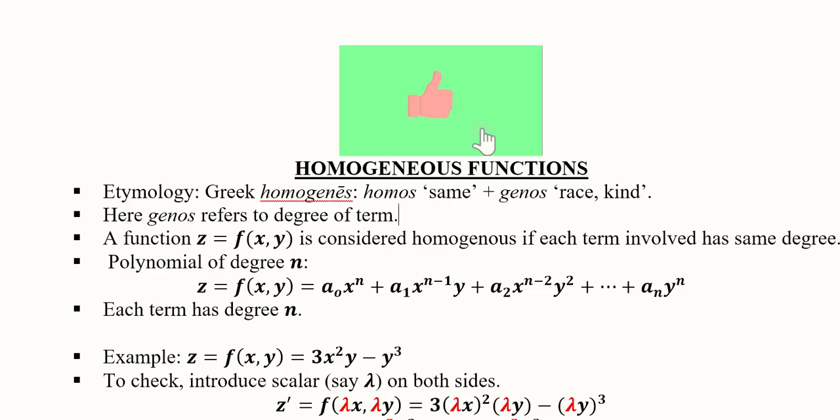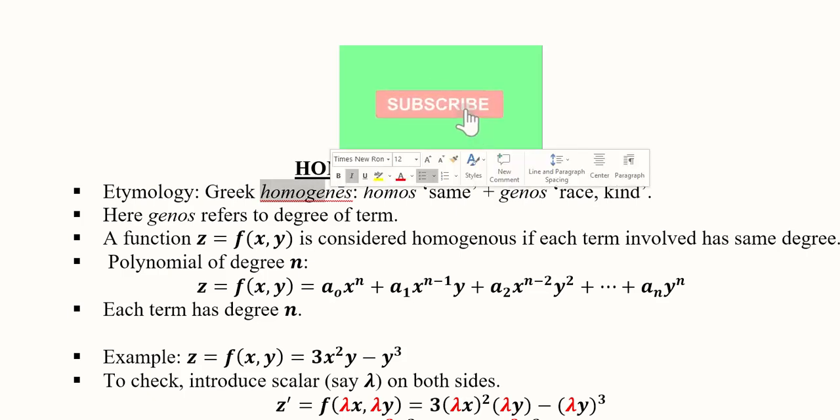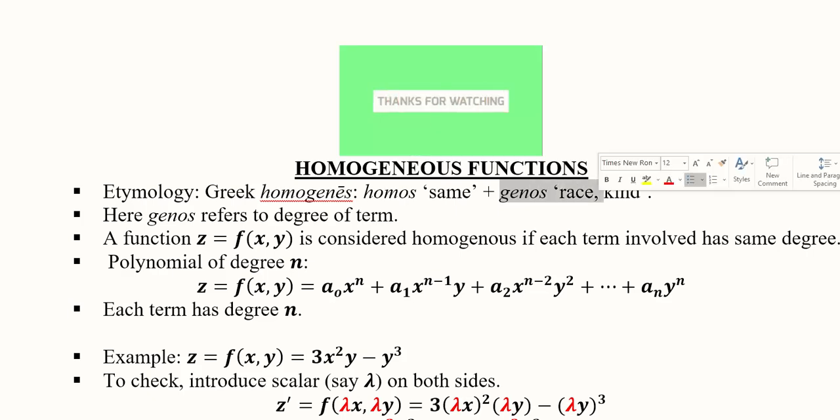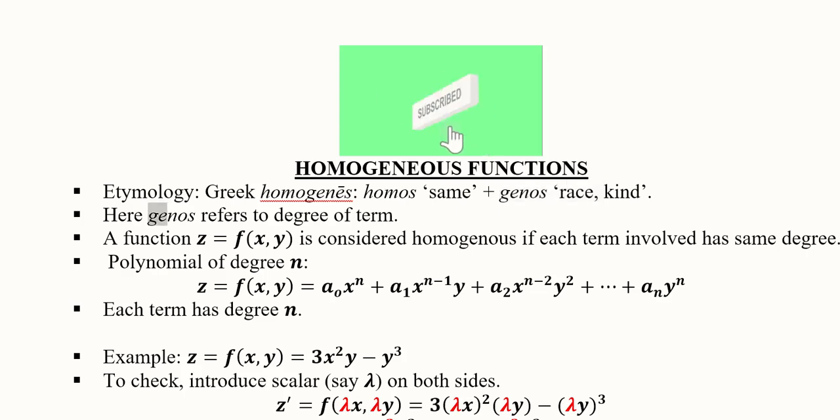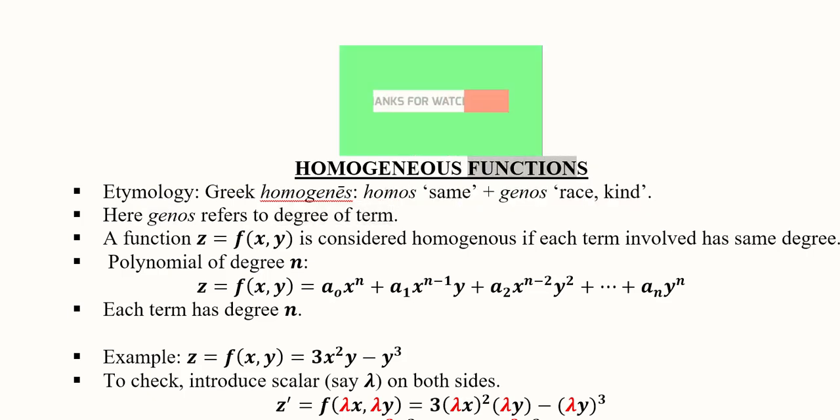Hi there, in this video we'll learn about homogeneous functions. Primarily, we should do the etymology of this word. It is stemming from the Greek word homogeneous, where homos means same and genos means race or kind. It means there is similarity in the type of something, but here we are not talking about any race or kind. We are talking about the degree of the term because we are talking about a function.